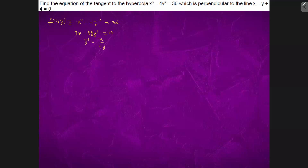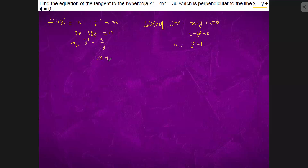The slope of the tangent should be perpendicular to the given line. Differentiating the line equation with respect to x gives 1 - y' = 0, so the slope of the line is m2 = 1. Since m1·m2 = -1 for perpendicular lines, we get (x / 4y) · 1 = -1, which implies x = -4y.